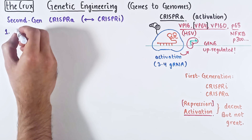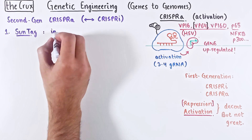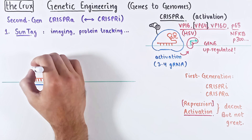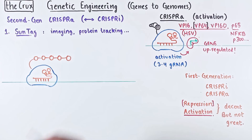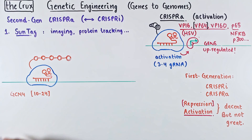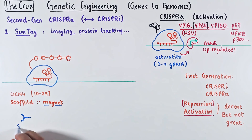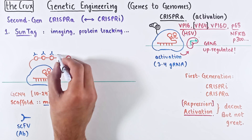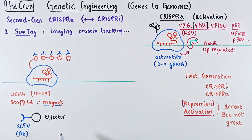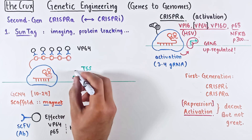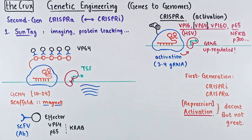One second-generation tool uses the SunTag approach, which you may have seen used for imaging and protein tracking studies. The idea is fairly simple: the dCas9 is fused to a string of repeated proteins called GCN4 — typically 10 to 24 repeats. The GCN4 tail acts like a scaffold or magnet for a single-chain variable fragment, which is a short antibody attracted to GCN4. This fragment can be fused with an effector domain of your choice, bringing a bunch of effectors wherever dCas9 lands. Using VP64, for example, will massively upregulate expression if dCas9 is guided close to the promoter.